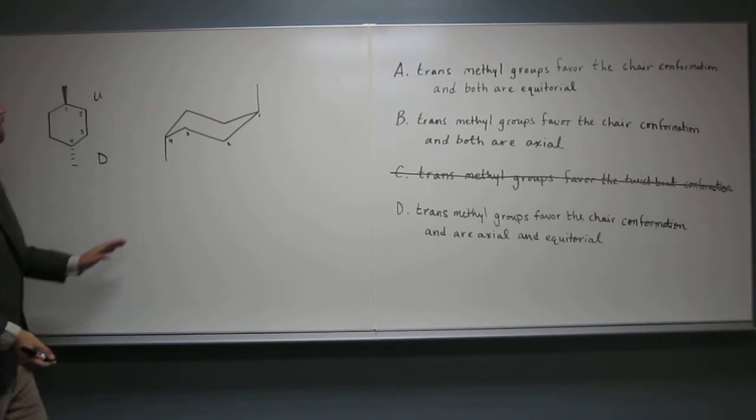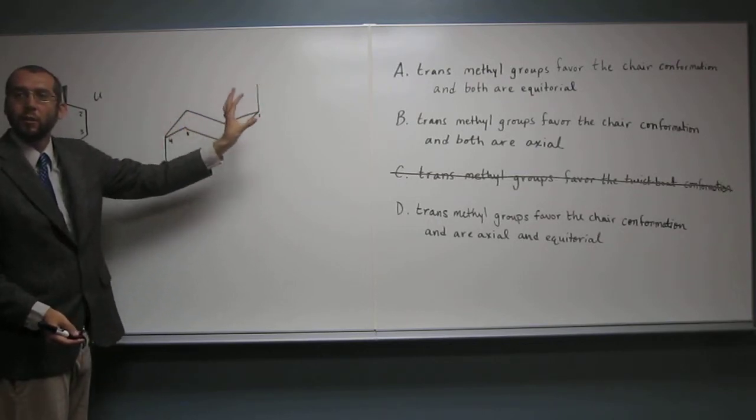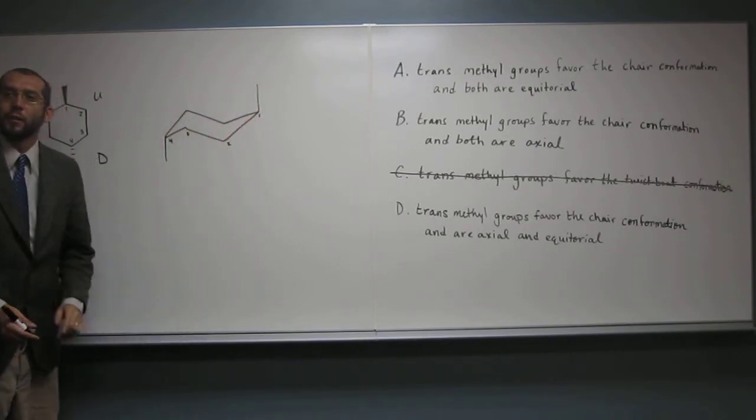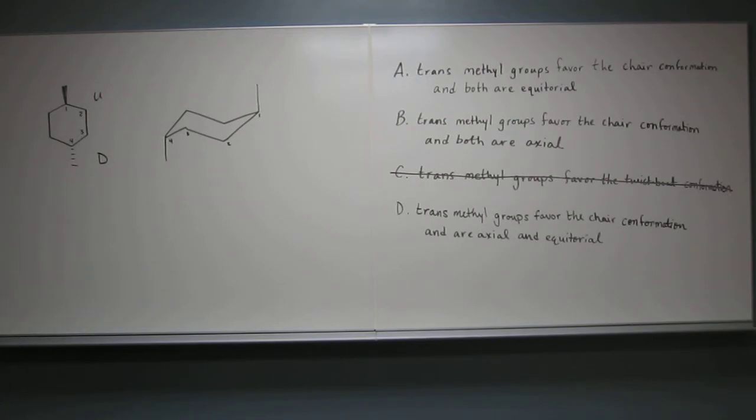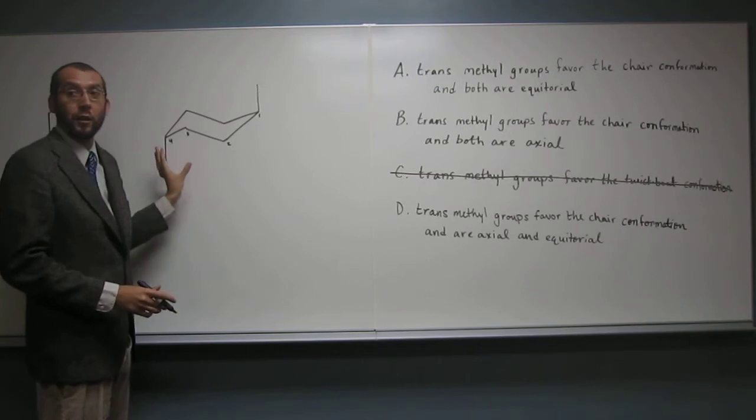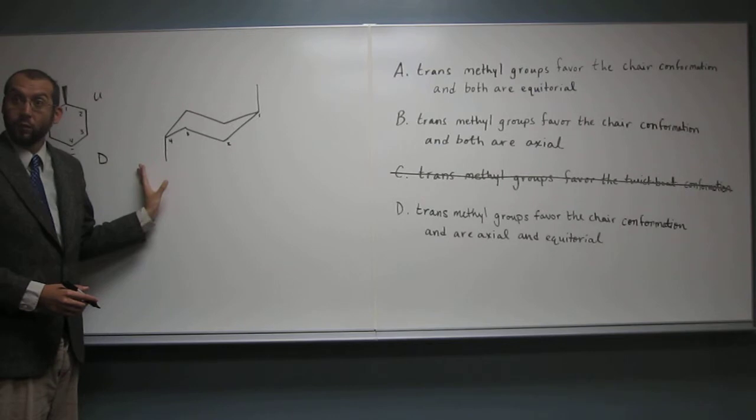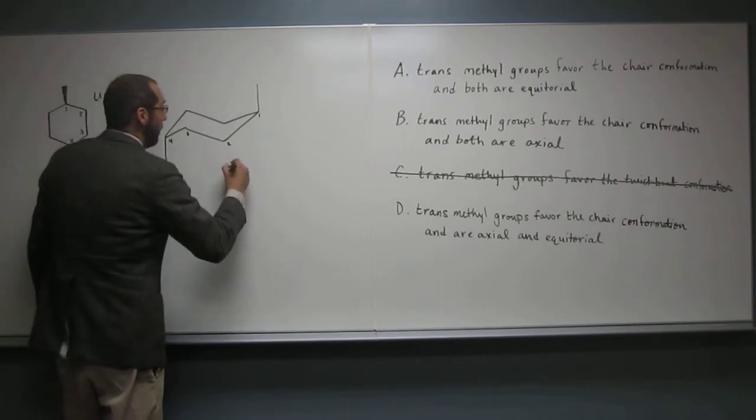So two groups axial, is that the lowest energy conformation? Is axial the lowest energy, or is that... Equatorial is the lowest energy. So it's two groups axial. Is that good for conformation? No. That's bad, right? So what we're going to do is do a ring flip. So let's do a ring flip.